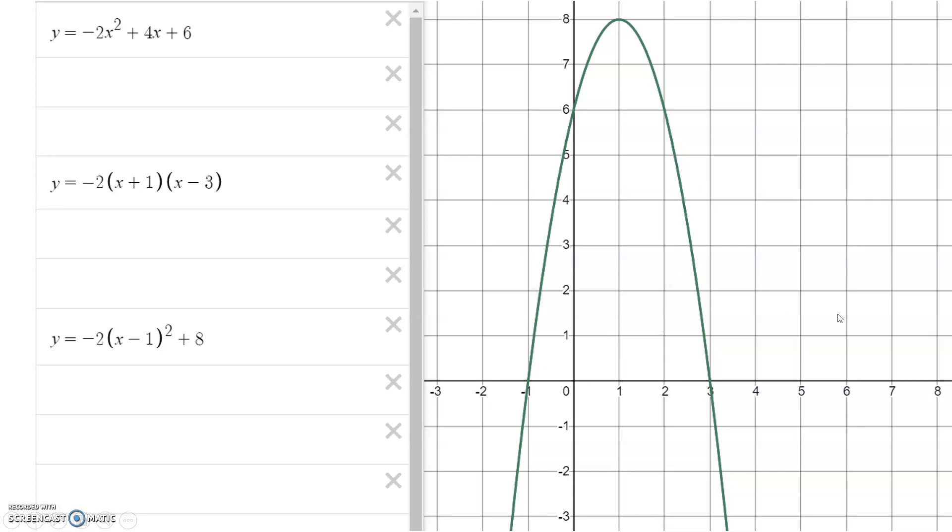You can see here that this parabola has a few interesting features. It has these points down here, and we call these points x-intercepts. It's negative 1 and 3. It has this point up here, which we call the y-intercept, because that's where it goes through the y-axis.